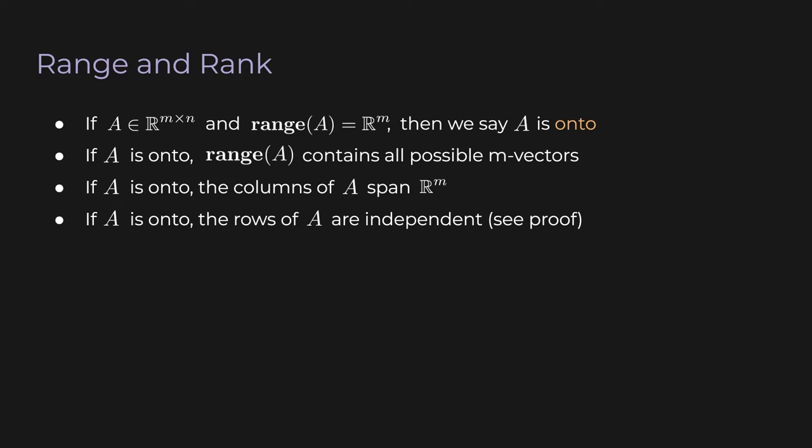Now let's talk about something called 'onto.' If we have some arbitrary matrix A in R^(m×n) and the range of A is R^m — meaning the range covers exactly the entirety of R^m — then we say that A is onto. In math we use it as an adjective. What this definition means is that if A is onto, then any vector in R^m can be hit by A. Given any vector y in R^m, we can always find some x in R^n where y equals Ax.